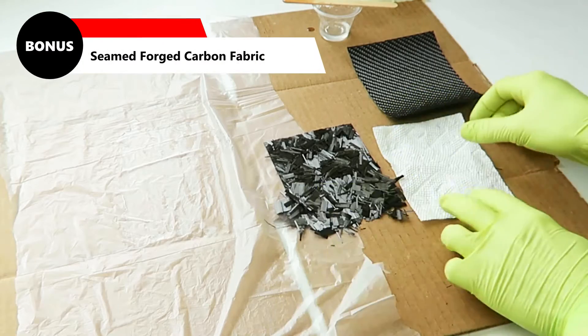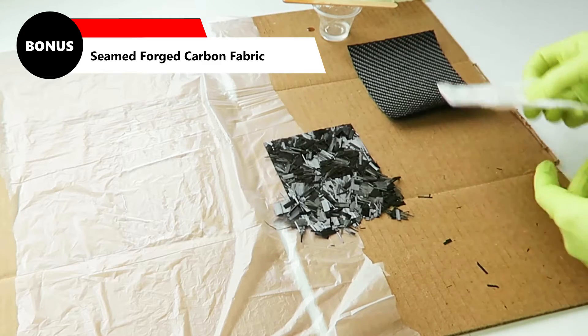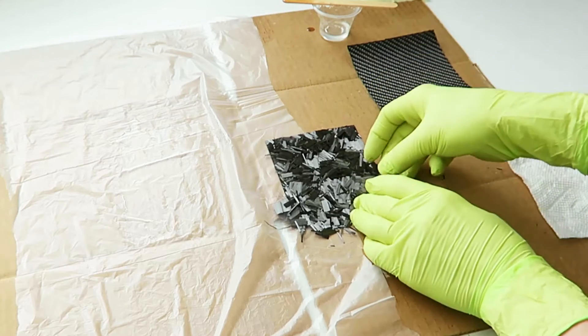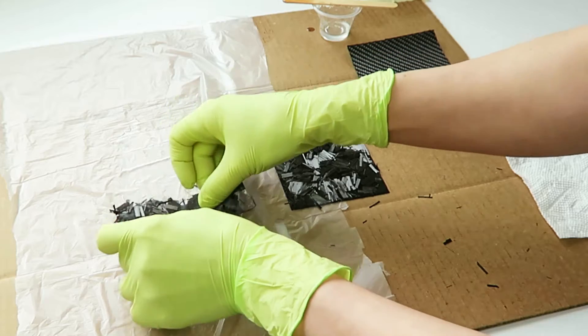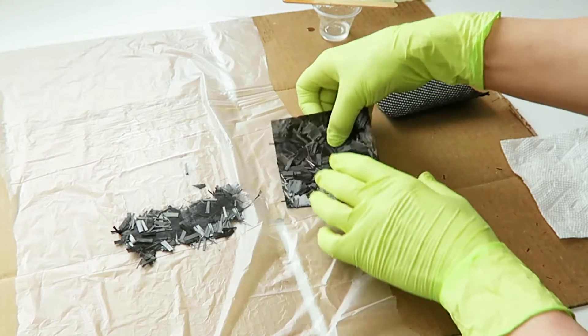Bonus tip: Overlap forged carbon fiber fabric along the irregular, blendable edge to make a seam that does not show up in the final part. This way you can utilize smaller pieces of fabric in larger projects.